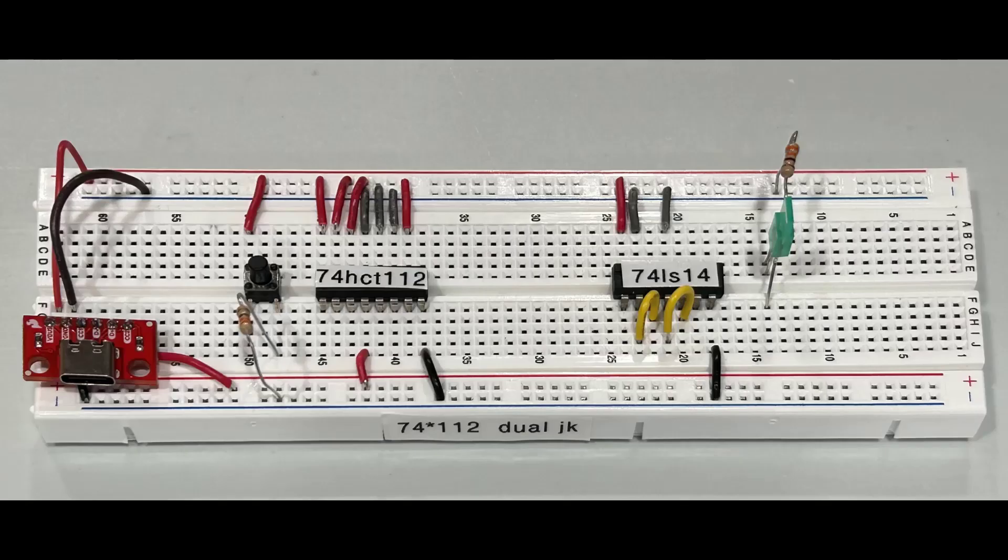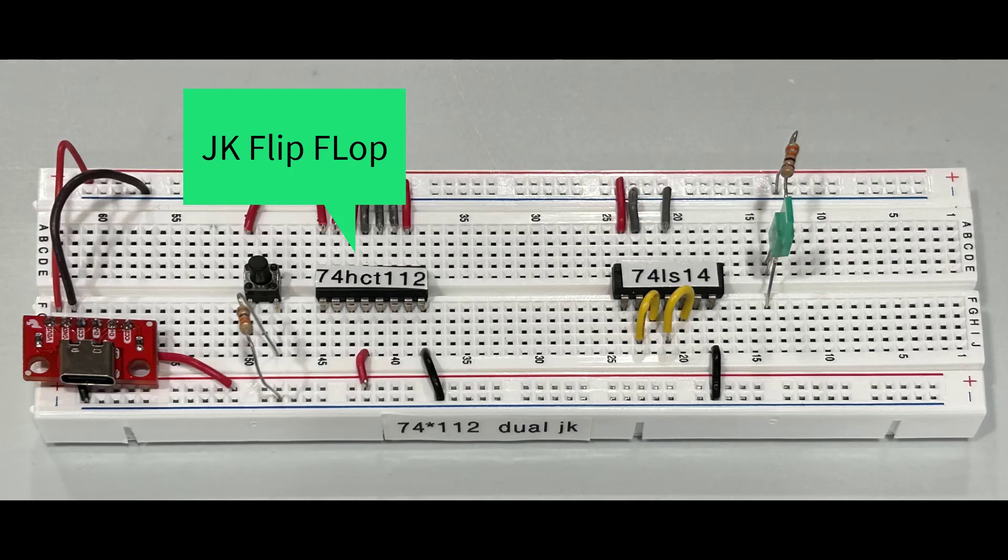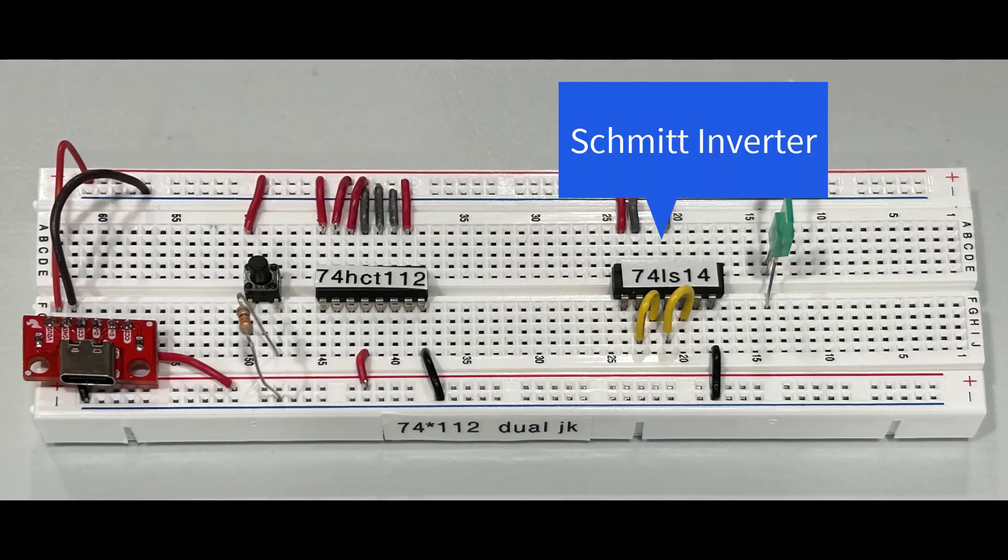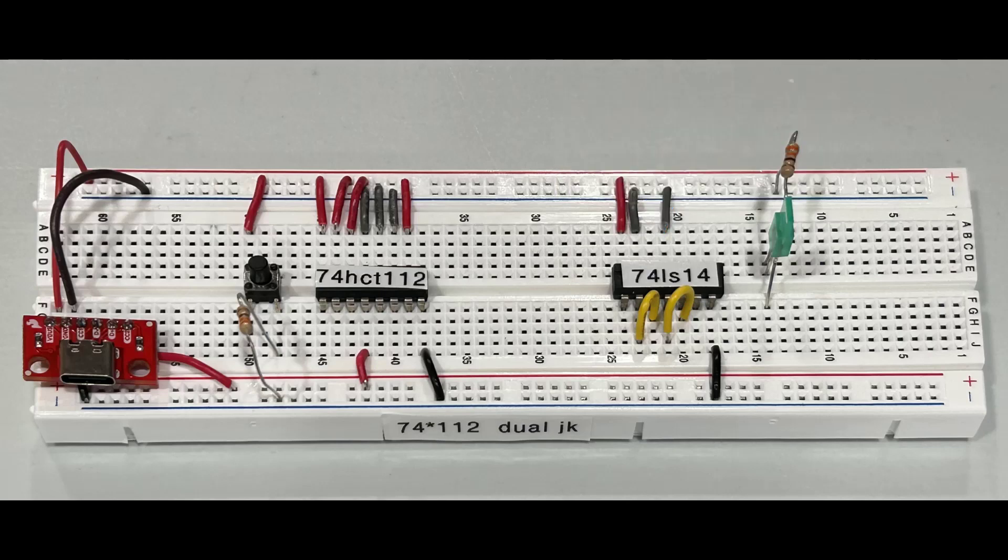Our second example will be a 74-112 dual JK with dedicated clocks per flip-flop. We are following the same convention with this circuit and will use yellow connect wire to signify the switch trigger, green wire to signify output, and white wire to signify the clock trigger. As a reminder, in this circuit we expect the set and reset pins, J and K, to both go high before the clock is triggered, thus generating a toggle.